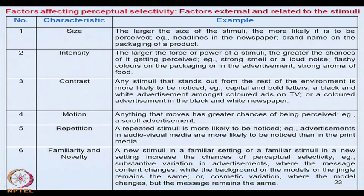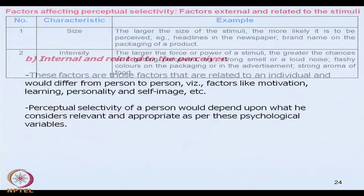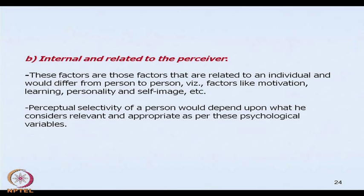Familiarity and novelty: a new stimulus in a familiar setting, or a familiar stimulus in a new setting, increases the chance of perceptual selectivity. For example, substantive variations in advertisements where the message content changes while the background remains the same, or the jingle or model remains the same. Or cosmetic variation where the model changes but the message remains the same. Any and all of these characteristics affect perceptual selectivity — these are factors external and related to the stimuli which will affect perceptual selection.